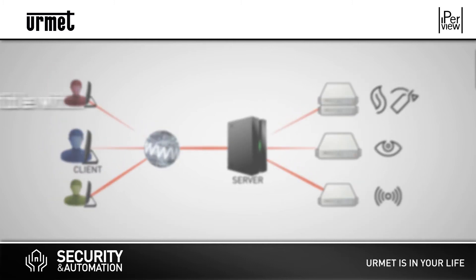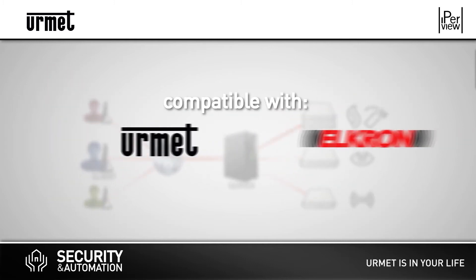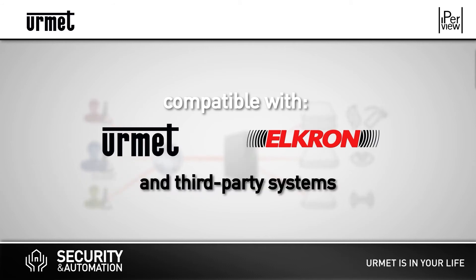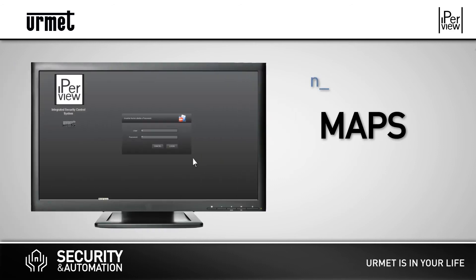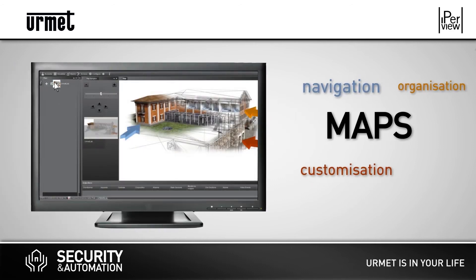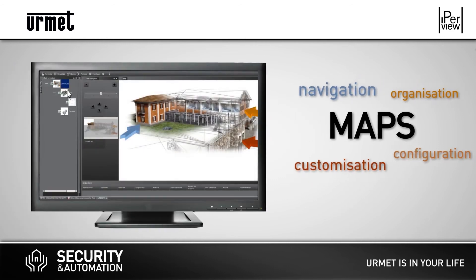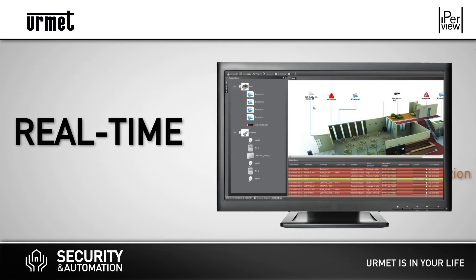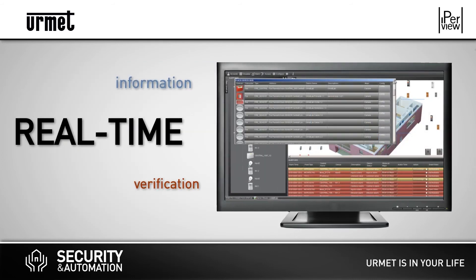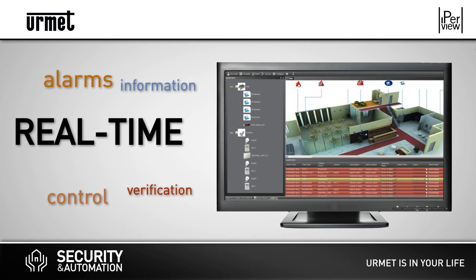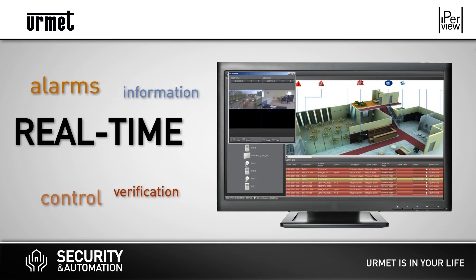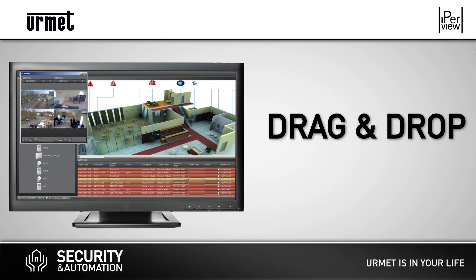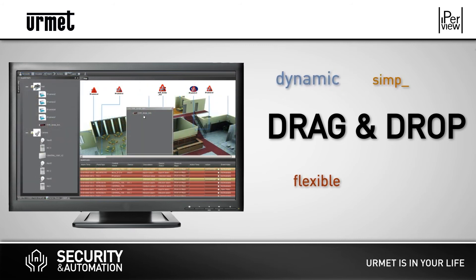Epaview is compatible with systems made by any manufacturer. More functions are available when it is used in combination with Urnet and Elkron systems. Epaview's visual interface is based on maps which can be organized hierarchically. Using your maps, you can move the devices on each map and display real-time information on each device's location and status. Just drag and drop to match sensors and actuators of any type.